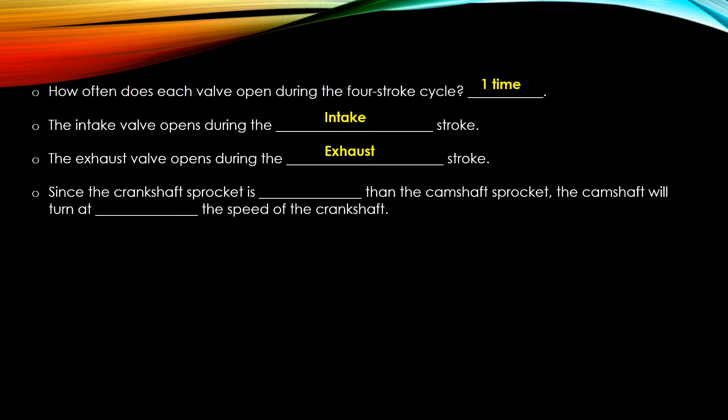Regarding timing sprockets: your crankshaft has a sprocket and your camshaft has a sprocket. The crankshaft sprocket is in the lower end and is smaller than the camshaft sprocket. As a result, the camshaft turns at one half the speed — the crankshaft rotates twice during the full four-stroke cycle and the camshaft rotates once.